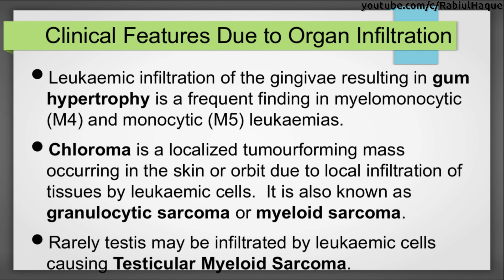Another very important clinical feature for examination is chloroma — a localized tumor-forming mass occurring in the skin or orbit due to local infiltration by leukemic cells. It is also known as granulocytic sarcoma or myeloid sarcoma. Rarely, the testis may also be infiltrated by leukemic cells, causing testicular myeloid sarcoma.